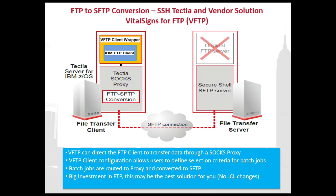With VFTP, you configure filter rules so that when a batch job matches something in the VFTP database, that batch job will automatically be routed to the SOX proxy, where the proxy will convert it from FTP to SFTP. The big thing to stress here is you do not have to make any JCL changes. If you have a significant investment in FTP, this might be the solution for you, as you don't need to convert all of those batch jobs from FTP to SFTP.